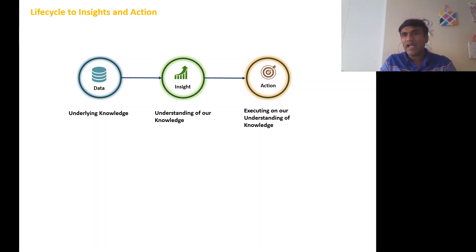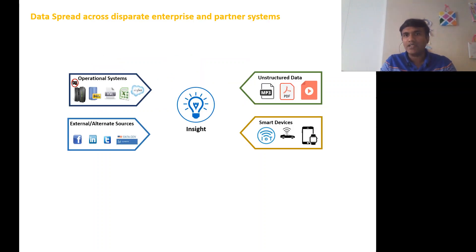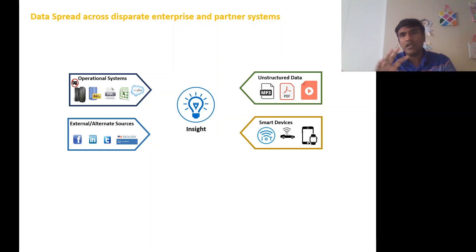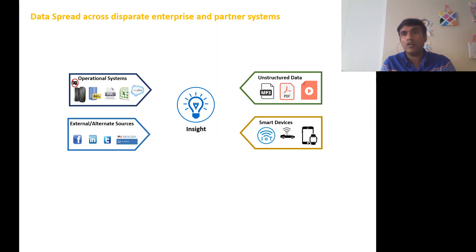This looks simple, but the challenge is that in order to get to that action and to get to that insight, I have to collect data from these disparate source systems. There will be operational systems — typically databases or file systems — which are more structured in nature, spread across the enterprise line of business. And there is also a lot of unstructured data in the form of voice call records, PDF files, emails, and text.